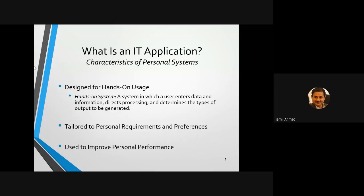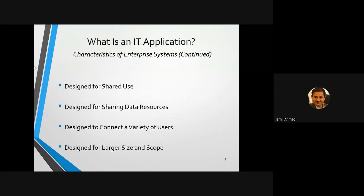The hands-on characteristics of the personal system are: a user enters data and information, directs processing, and determines the type of output being generated. The hands-on system is a personal system in which data and information can be entered in a single computer with outputs as per desired. If we want to improve performance, we have to tailor personal requirements and change preferences, which requires evaluating our organization.